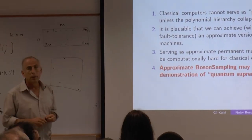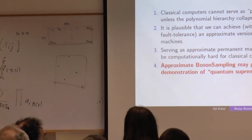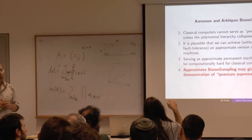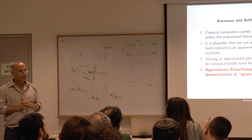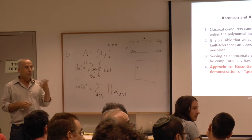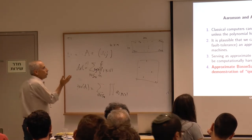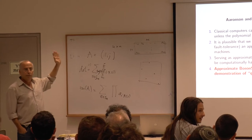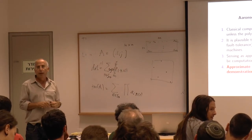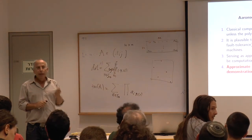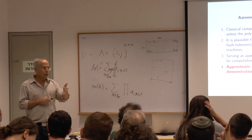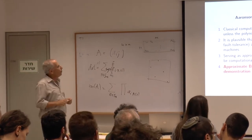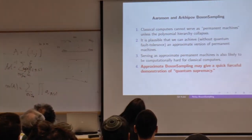It's worth noting that to sample according to the permanent means you get one sample out of exponentially many, and all you know is that the probability of getting that sample was proportional to some permanent. Computing the permanent is intractable. Here is a suggestion by Aaronson and Arkhipov from a paper about three or four years ago — I think Scott Aaronson talked about it in our seminar several years ago.